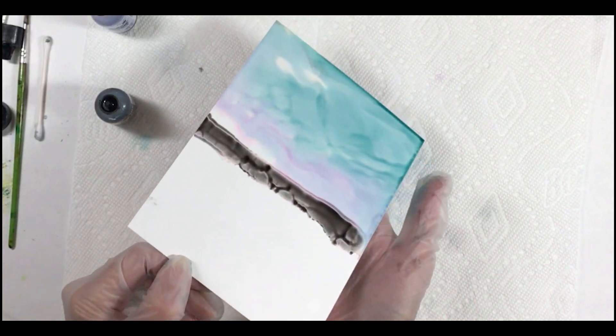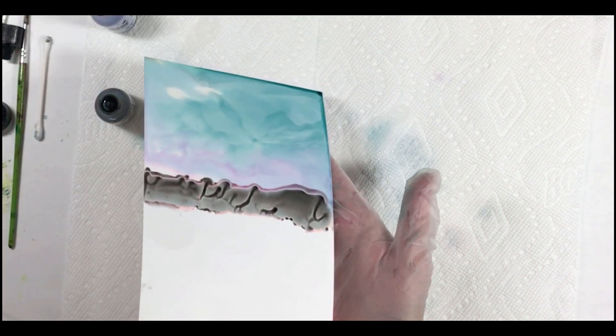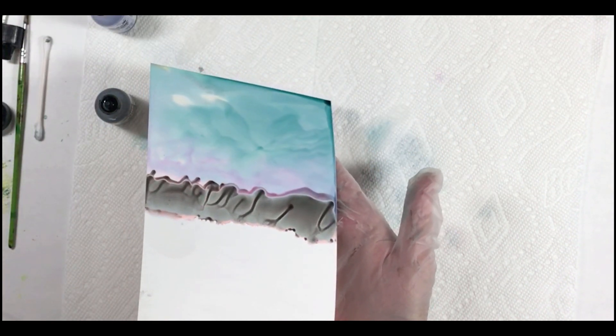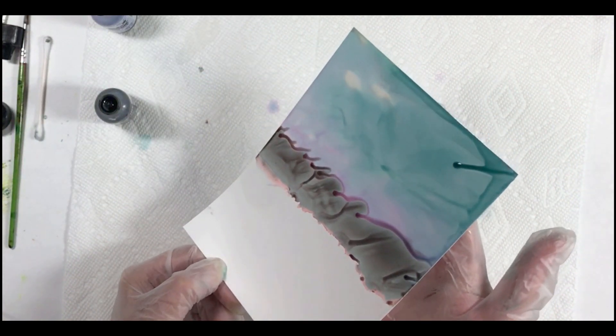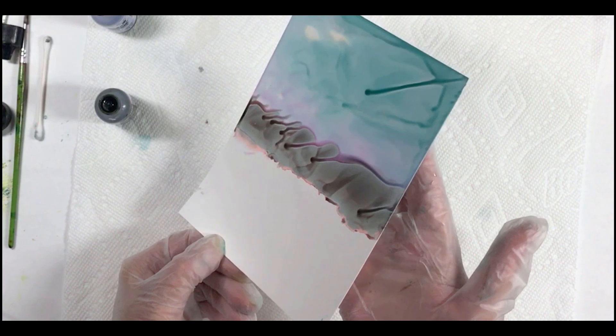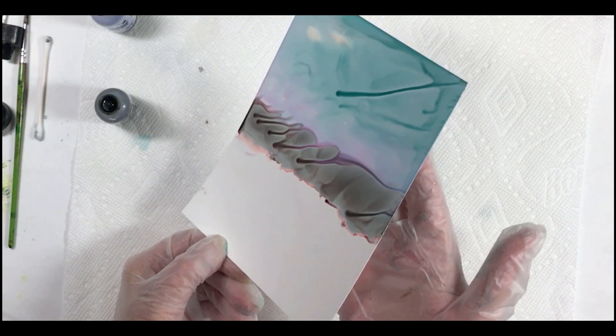The next color we're going to use is slate and again we're going to put that along the bottom of the cool peri and we're just letting it creep up into the wet area so we're going wet into wet here.